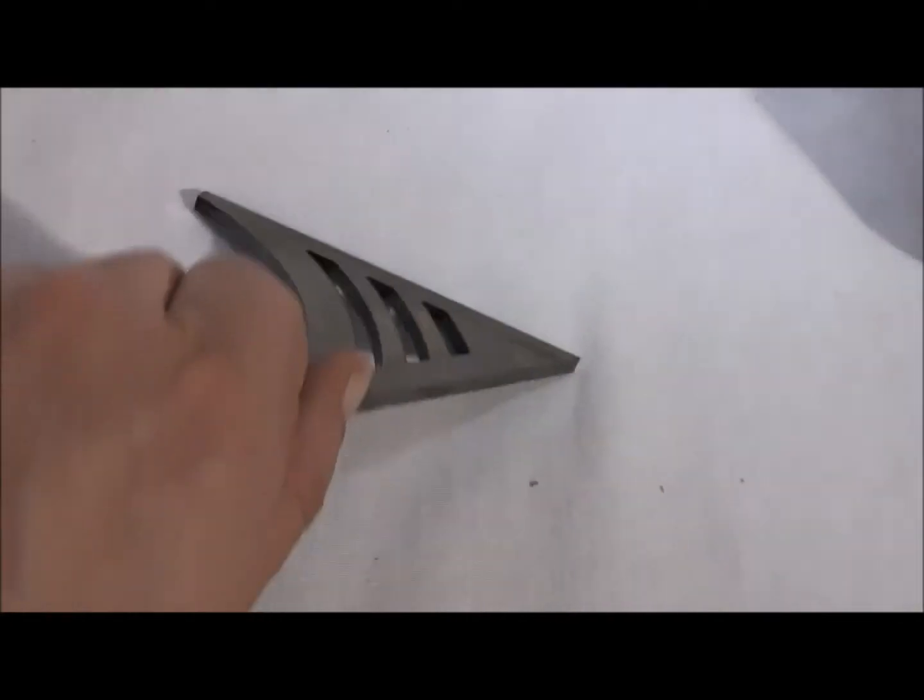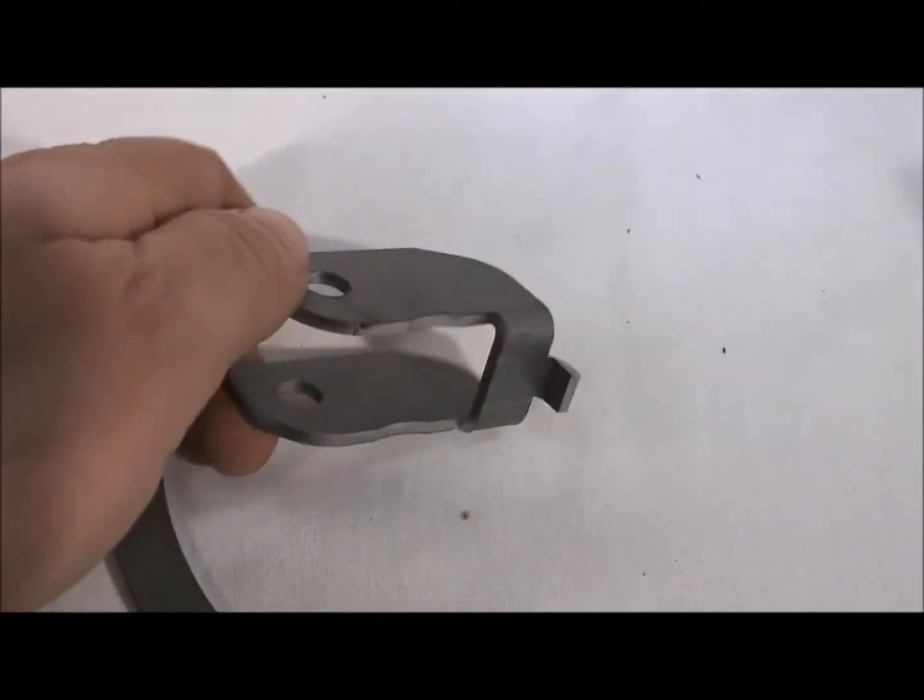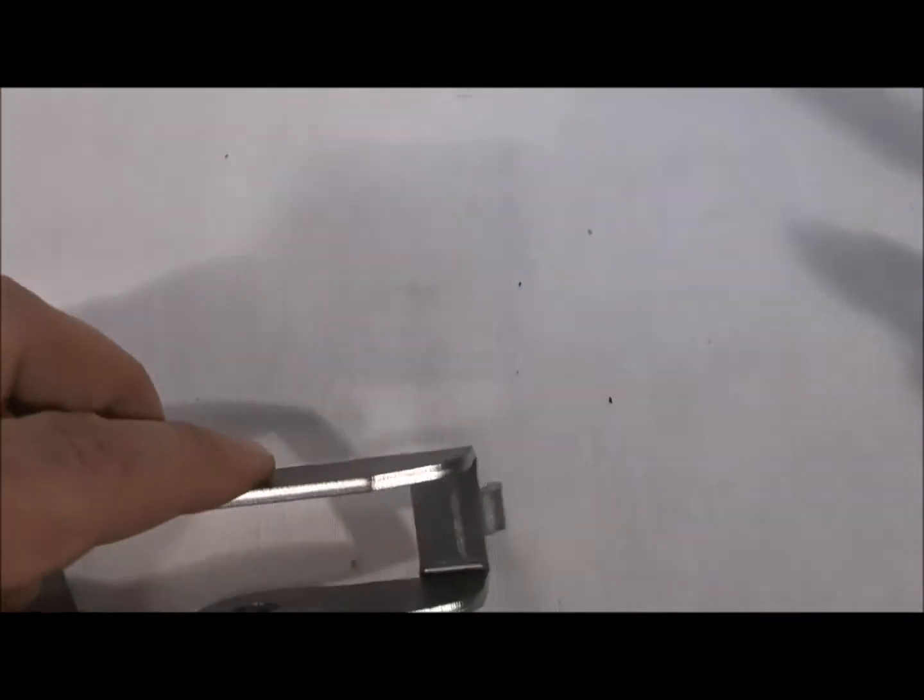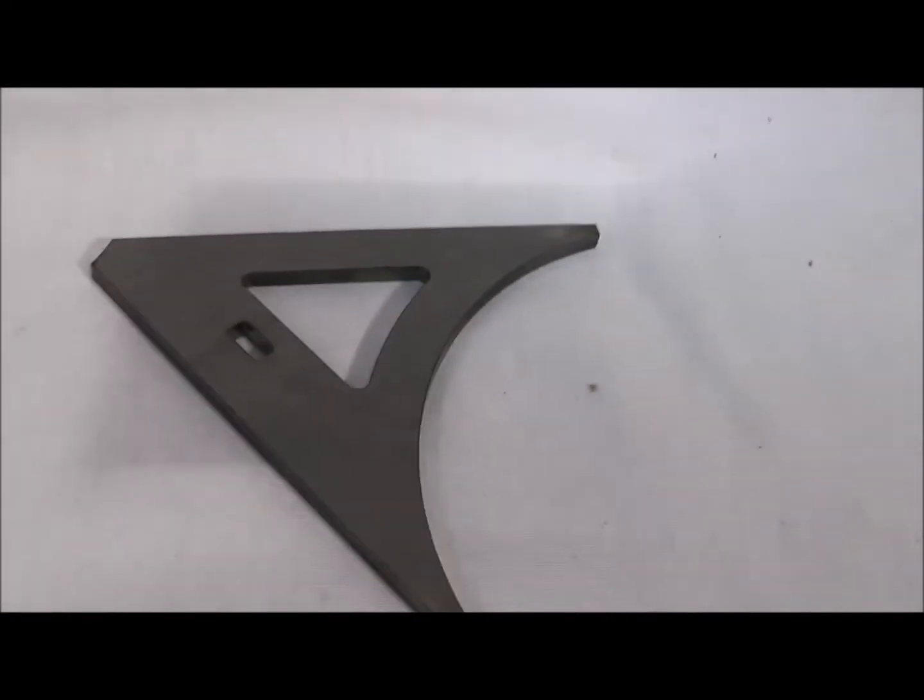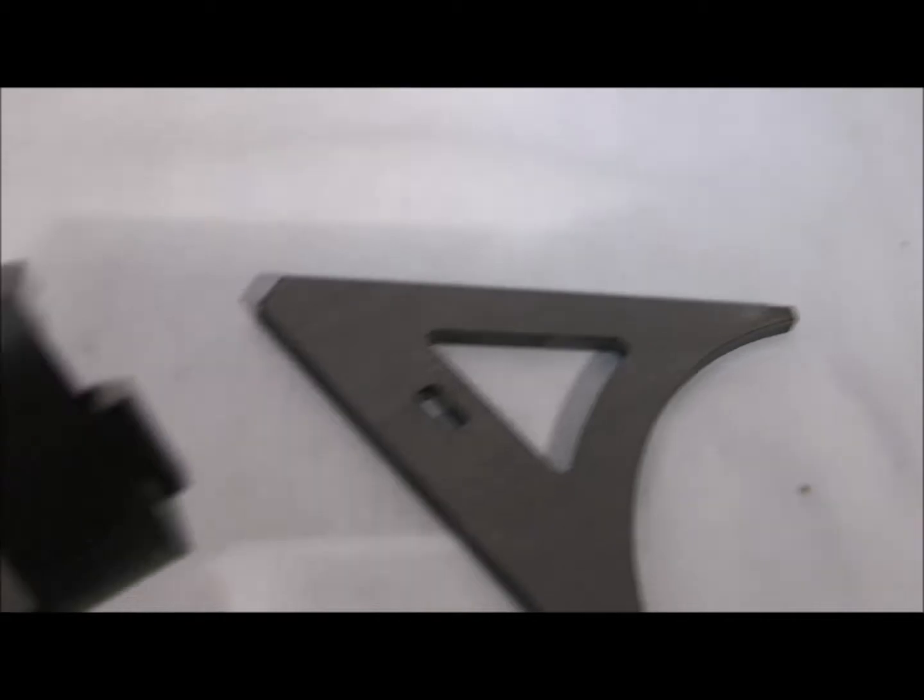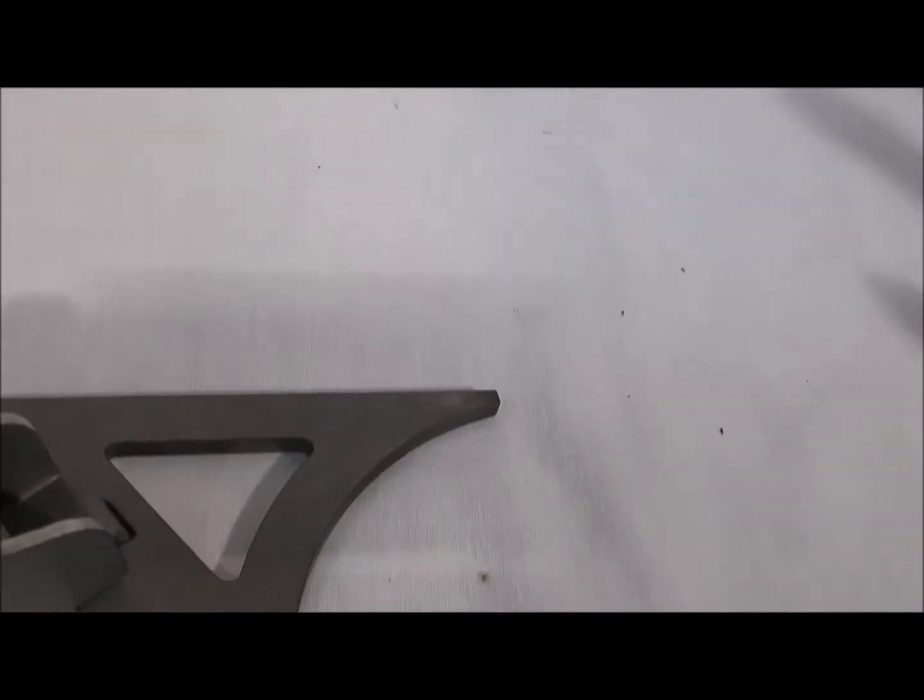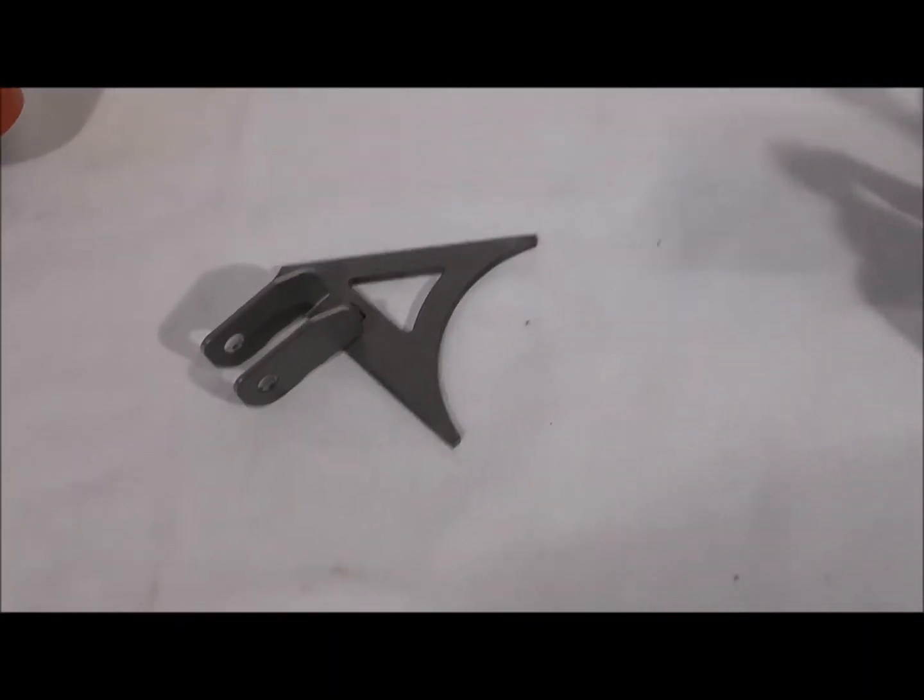Here I have some of the gussets that will get welded in. 3/16 steel. This is the sway bar end link mount. You can see that's formed, it's all one piece, no welds. This is our front 3/16ths gusset and you can see if you look on here we got a little tab sticking out the bottom and that just pops right into the slots. Like building a puzzle.